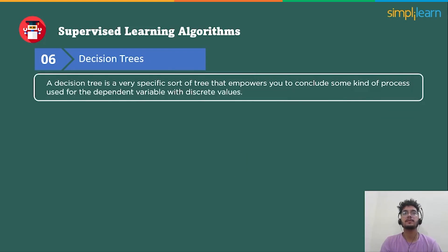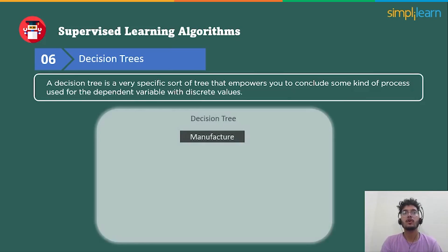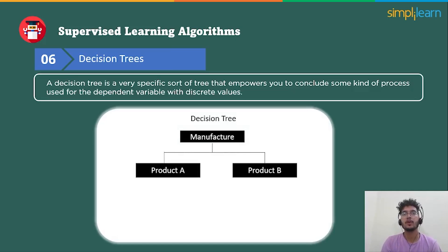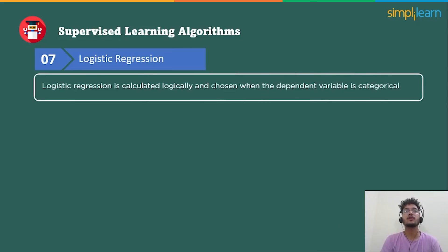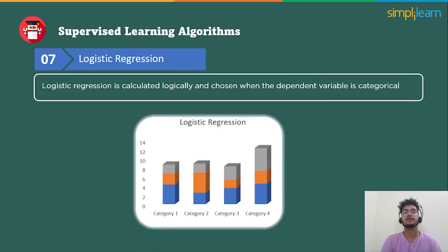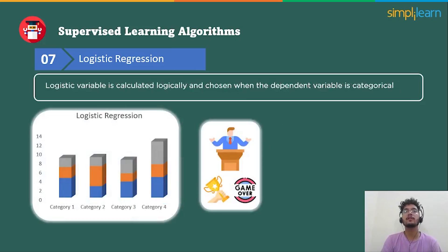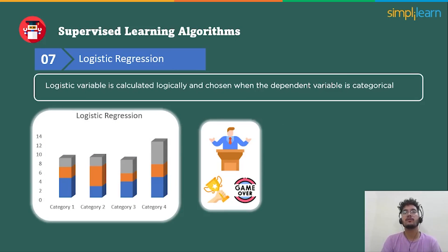A decision tree is a specific type of tree that enables you to decide some kind of process, used for dependent variables with discrete values. For example, you want to pick between manufacturing product A or product B, or putting resources into decision 1, decision 2, or decision 3. Decision trees are an excellent method for managing these kinds of complex choices. Logistic regression is used when the dependent variable is categorical, meaning they have binary outcomes — for example, predicting whether a political nominee will win or lose, or whether a student will be admitted to a specific school.